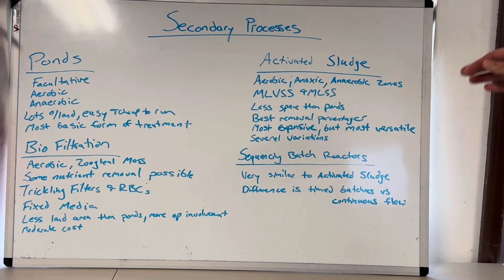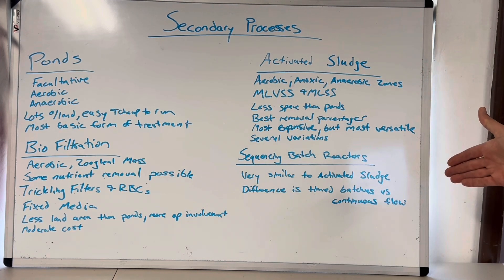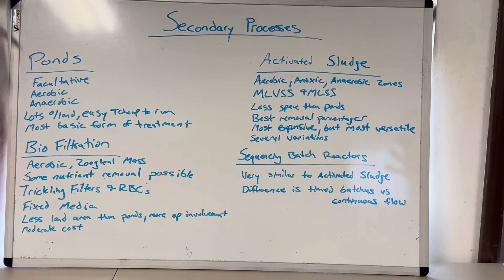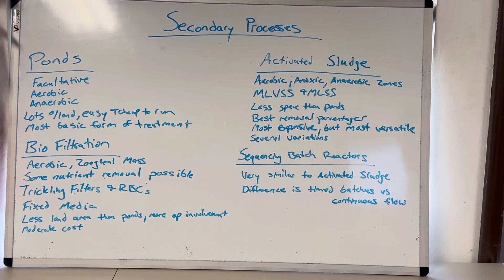Ponds, biofiltration, activated sludge, and sequencing batch reactors are the four biological processes that the California State Water Resources Control Board uses to classify a plant and give it its level of certification needed. Let's break this down and talk about each one.